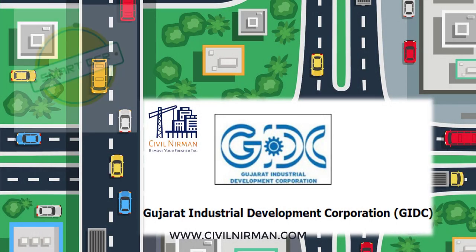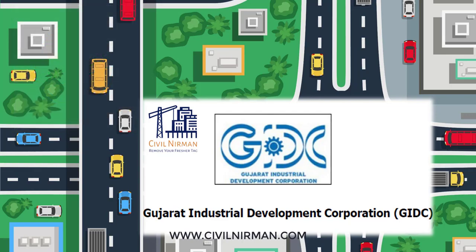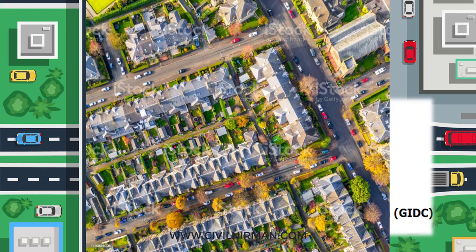Welcome to Civil Nirman. In this session we are going to discuss important information related to the Smart DCR system, which is basically an online building plan approval system developed by the government, used by architects and government officials for plan approval. Every city in the world is continuously evolving and developing to meet its citizens' needs, and an authority empowered by the government controls the development of cities for harmonious, infrastructural, and technologically superior living.